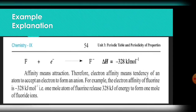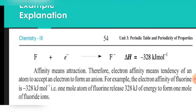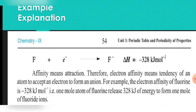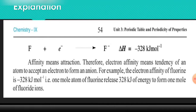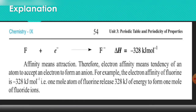The second reason is that when we move from left to right in the periodic table, the size of the atom decreases. The attraction of the nucleus for the incoming electron also increases due to the decrease in size. There will be a stronger hold of the nucleus on the incoming electron and the outer shell electrons, so more attraction means more energy will be released.